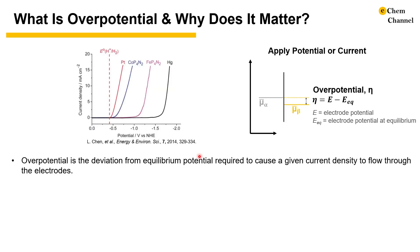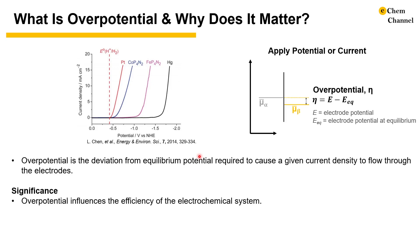It is demonstrated in the cyclic voltammograms here, comparing a number of catalysts for hydrogen production. It is clear that platinum requires the smallest overpotential to get a specific current. Overpotential is important because it is omnipresent in electrochemical systems, affecting their efficiency.